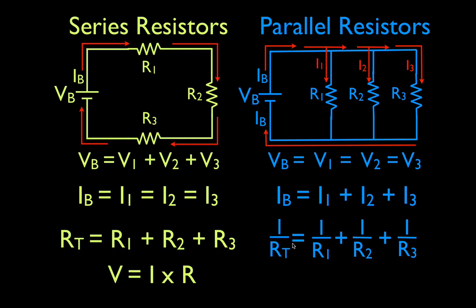The last thing is Ohm's law — the equation we use when doing calculations concerning the voltage, the current, and the resistance. Ohm's law is V = I × R: the voltage equals the current times the resistance. This equation can be applied to both series and parallel circuits. So we went through the voltage and current rules, went over the equations to calculate the equivalent resistance, and confirmed that Ohm's law can be used for both types of circuits.